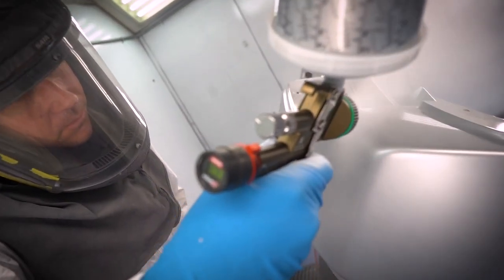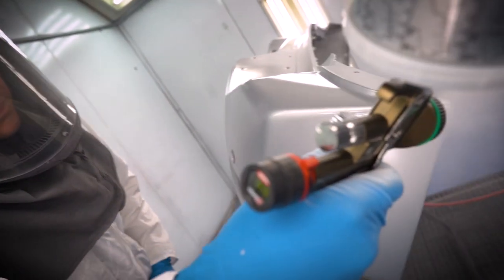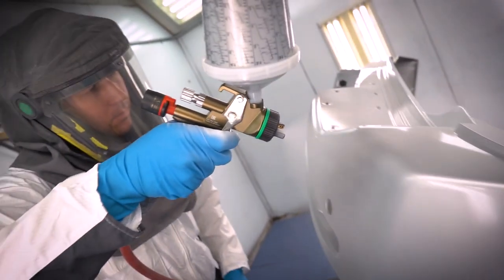So HVLP, again, high volume, low pressure, can give you incredible transfer efficiency, but it can give you very, very good paint look in color. But even on clear coat, we can see where people may want to spray with HVLP to save more product, you'll have less overspray.